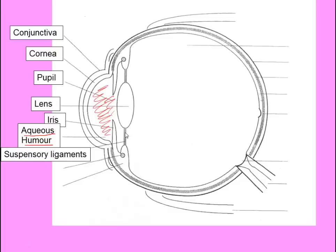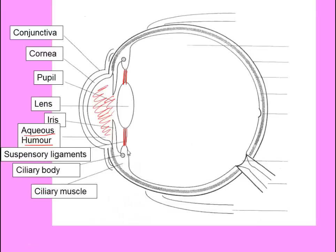The suspensory ligaments have the function of gripping onto the lens. Here we have the ciliary body and ciliary muscle, which are involved in contracting to change the shape of the lens. The ciliary body and muscle is involved in changing the shape of the lens in order to focus the light.